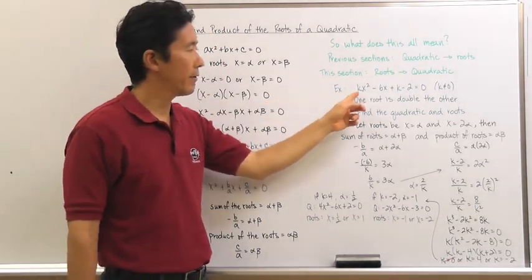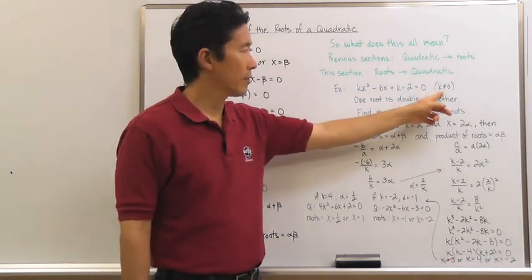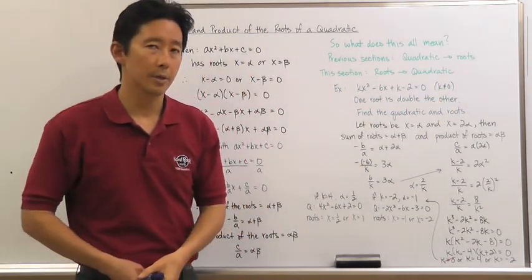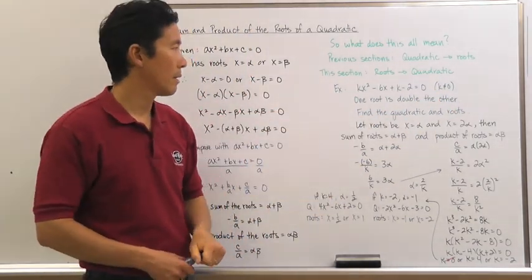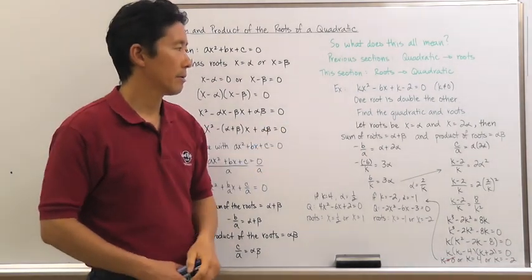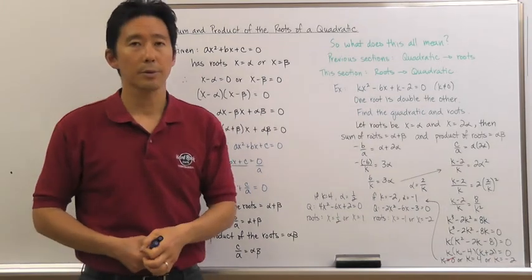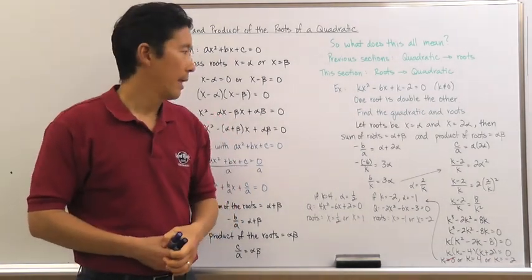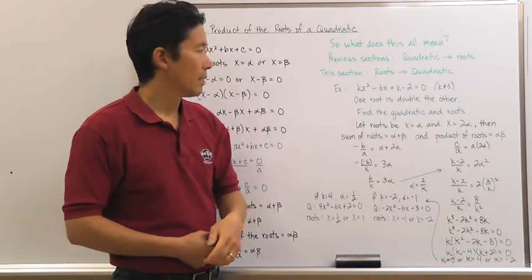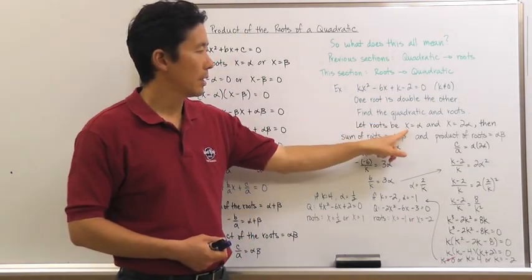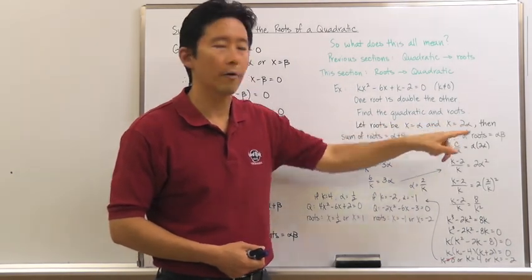Here's a situation. We have kx² − 6x + (k − 2) = 0, where k cannot be equal to zero. So we have a quadratic equation where one root is double the other. What we're trying to do now is find the quadratic and the roots that are produced. Since one root is double the other, let the roots be x = alpha and x = 2alpha.